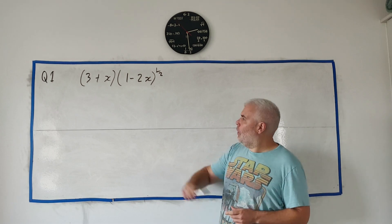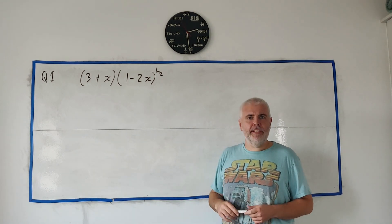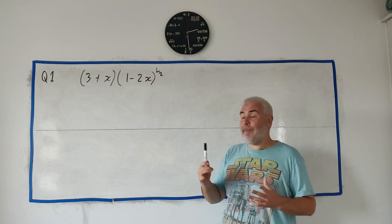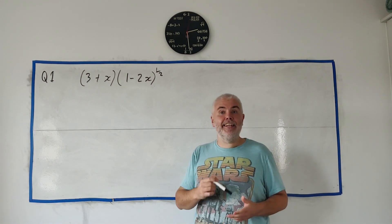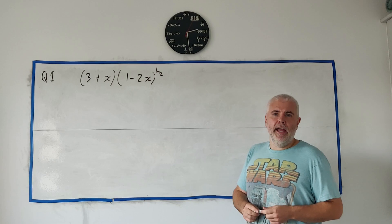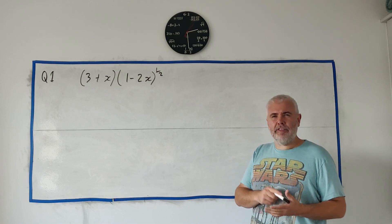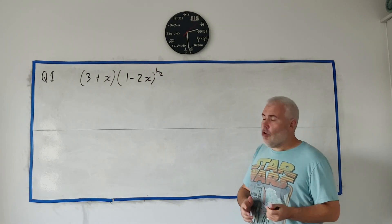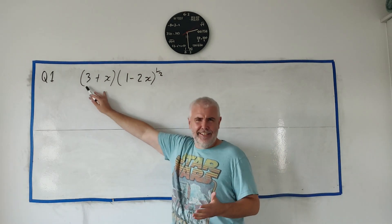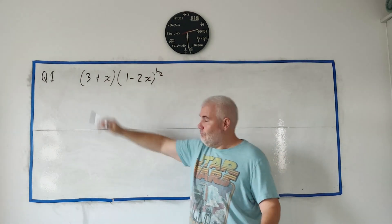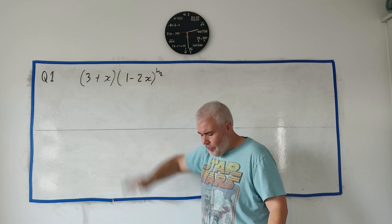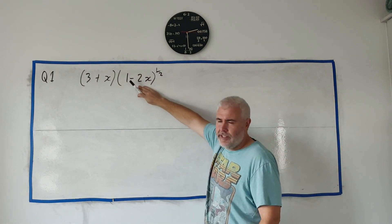In question 1, we have these two terms here that multiply together, and they ask us to expand it out in ascending powers of x, up to x squared. So we don't have to go past x squared. So how do we do that? The left side is easy to deal with. It's just a simple two numbers, no power at all. So we have to deal with this right side.